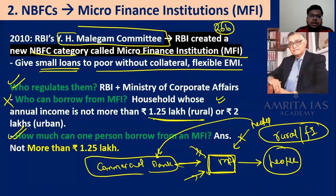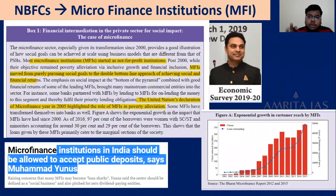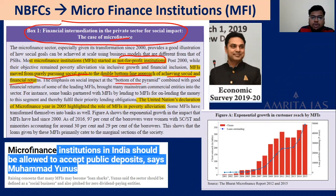In the recent Economic Survey, they discussed financial intermediation in the private sector for social impact — the case of microfinance. MFIs are non-profit institutions that have moved from purely social goals to a double bottom line approach of achieving both social and financial returns. Their impact is at the bottom of the pyramid. The United Nations declaration on microfinance in 2005 highlighted the role of MFIs in poverty alleviation.